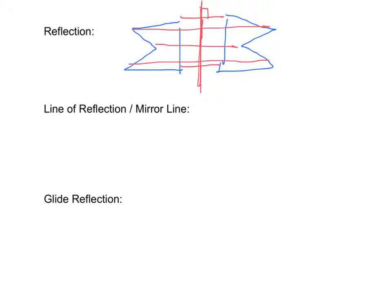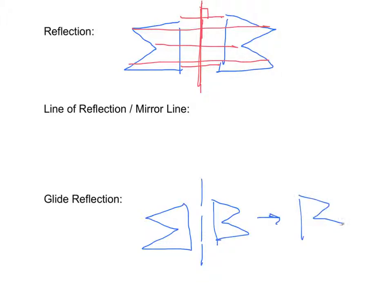A glide reflection is the combination of a translation and a reflection. So we can have a figure, reflect it over a line, and then move it — that's a glide reflection.